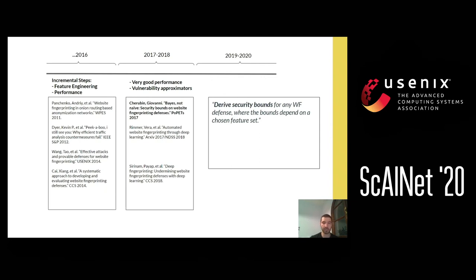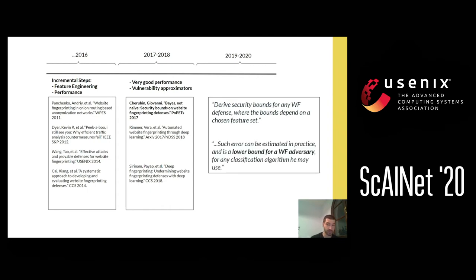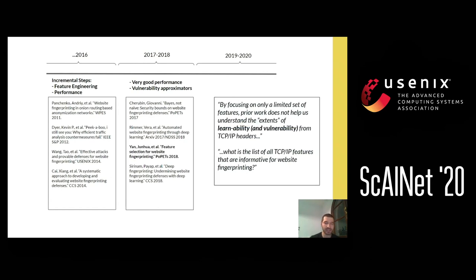Because of the very good performance of deep learning models, the idea of vulnerability approximators was proposed. Given a website fingerprinting defense, we can estimate the security bounds of an adversary given a chosen feature set. This provides a lower bound of security, which we didn't have before. However, the estimation can only be done based on a chosen feature set. This gap was covered by a later paper focusing on the learnability of the protocol based on an exhaustive search of features.